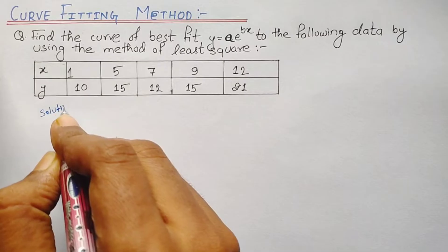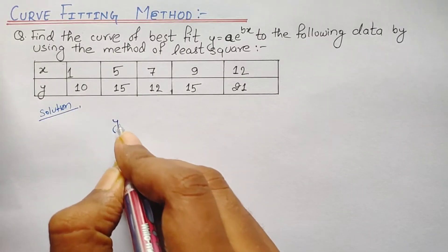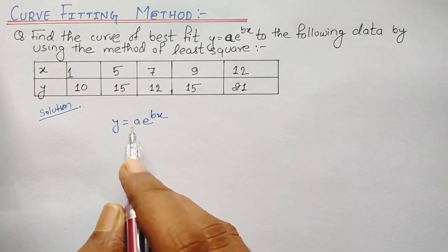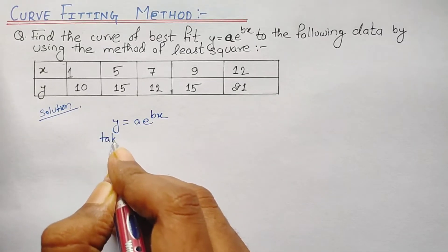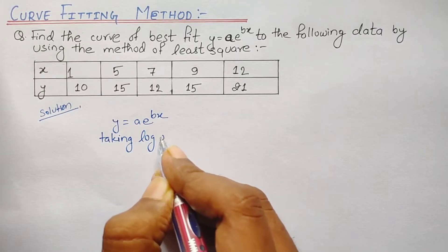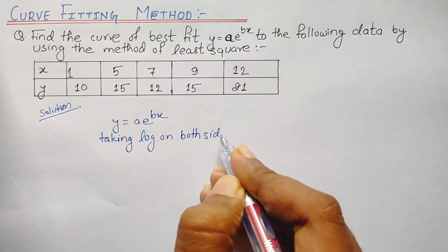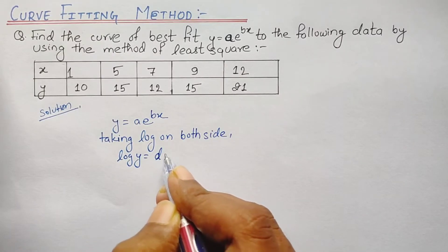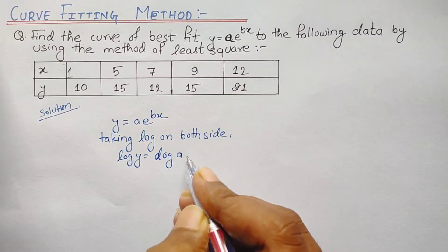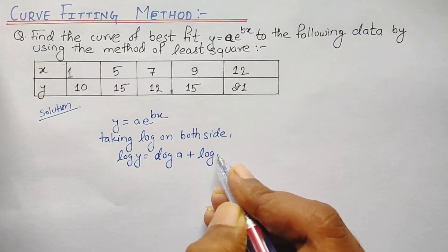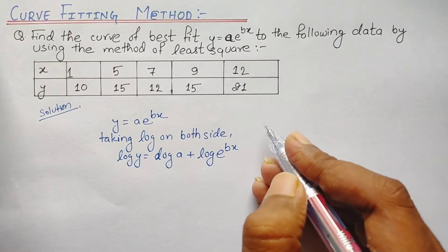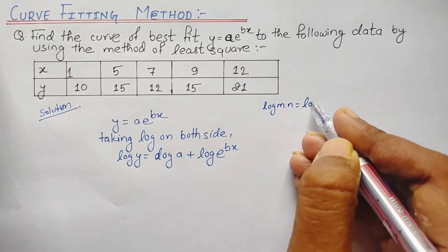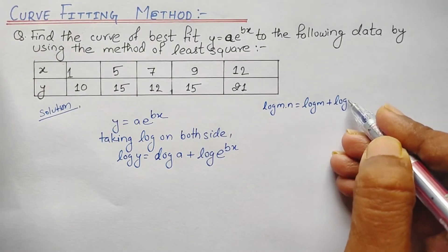The equation is y equals a times e to the power bx. Since we have an exponential in this equation, what we do is take log on both sides. Taking log on both sides, we get: log y equals log a plus log of e to the power bx. If we remember the law of indices — log(m times n) equals log m plus log n — we have used that same rule here.